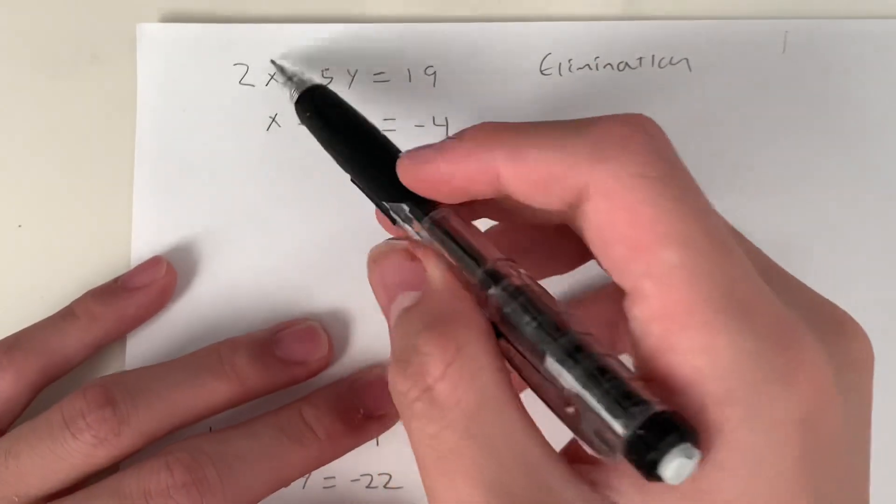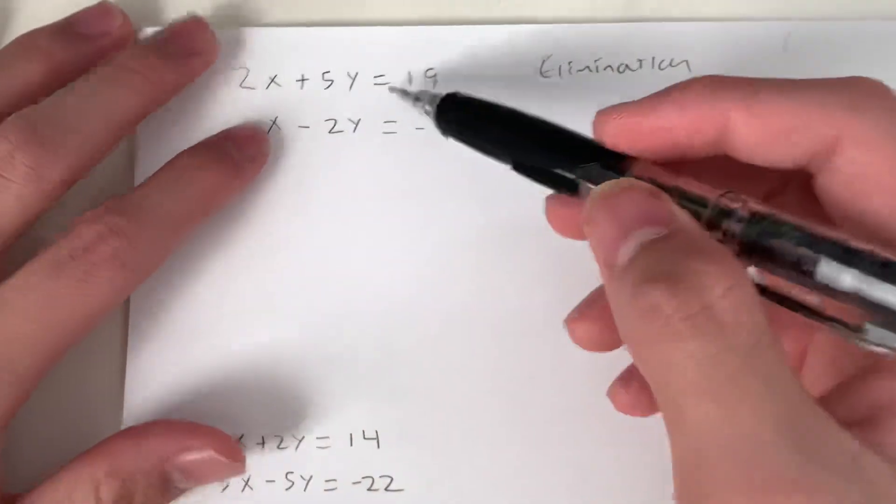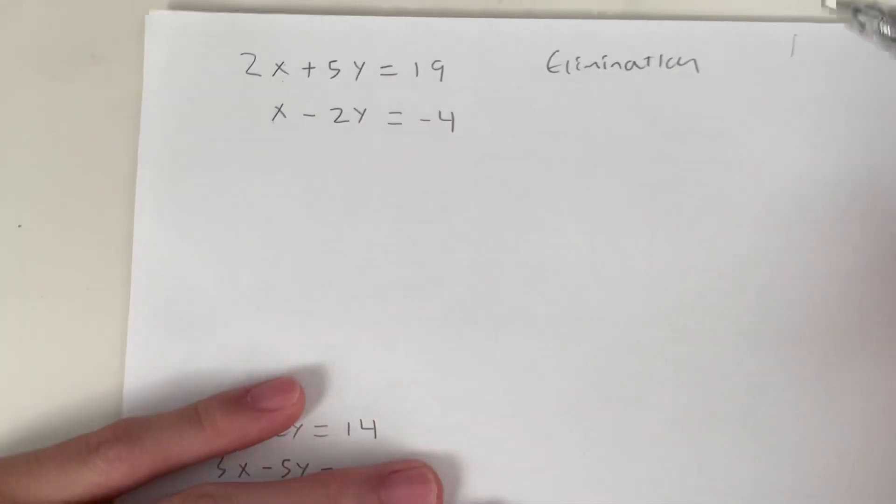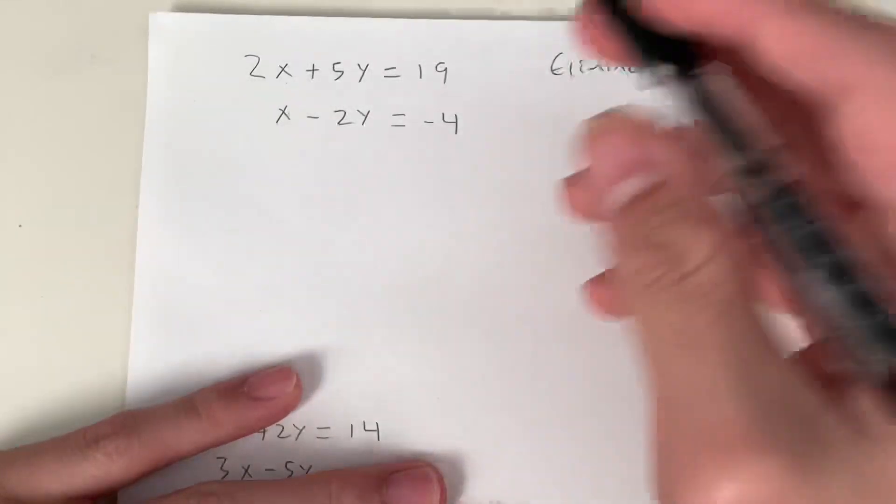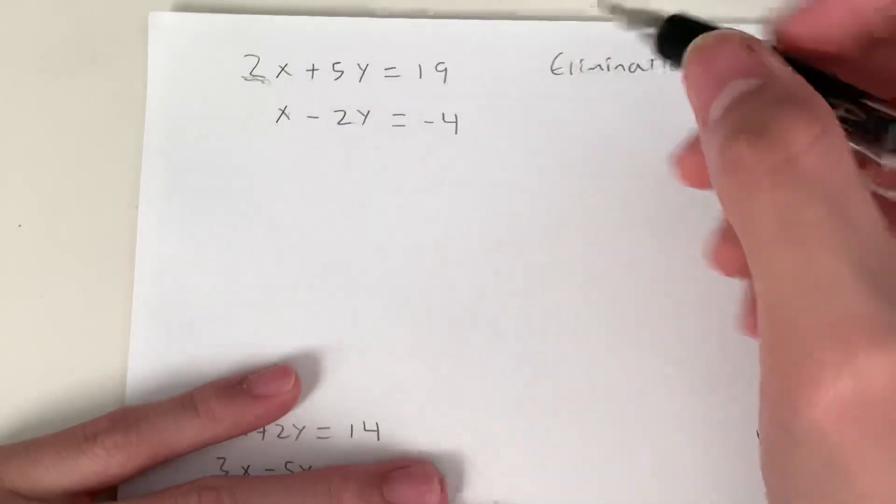Now I'll show you how to do it. Basically, you look at your x terms. Usually you want to look at your x or y, but usually look at the x because it's easier. And you find the least common multiple. So looking at the leading term, this is a 2.